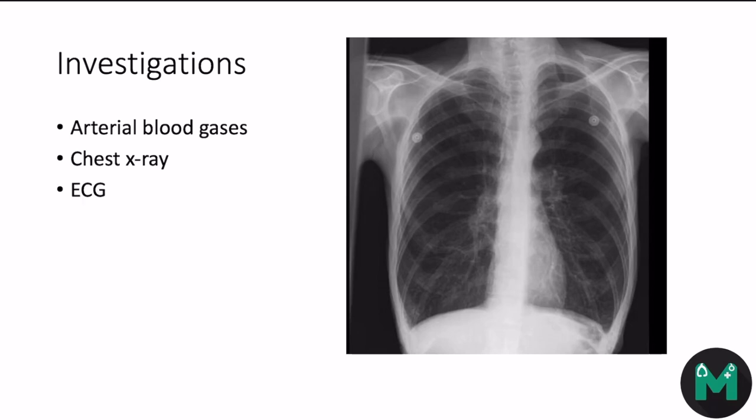An ECG can show signs of right-sided hypertrophy, including right axis deviation, peaked P waves, and sinus tachycardia. The most important investigation for diagnosis is spirometry — specifically, a post-bronchodilator FEV1/FVC of less than 70% predicted, which demonstrates airflow obstruction.